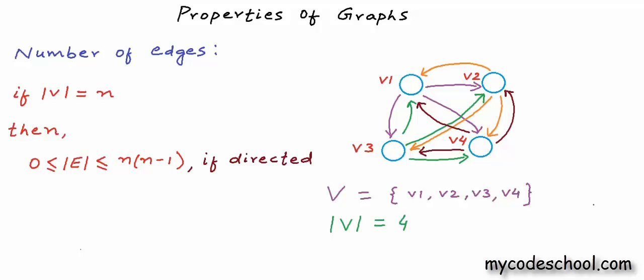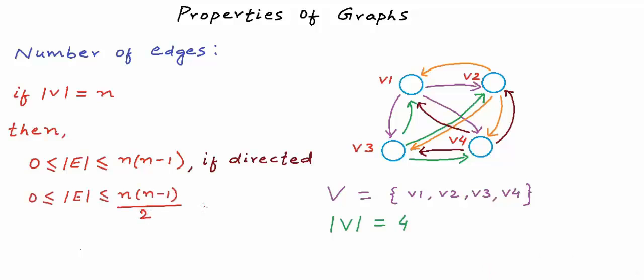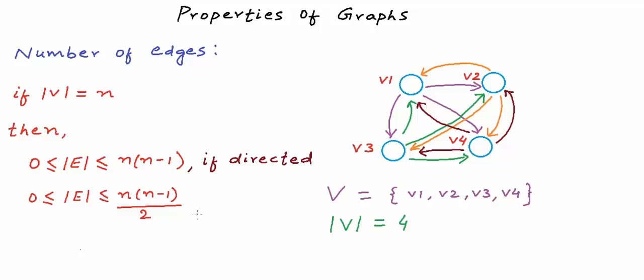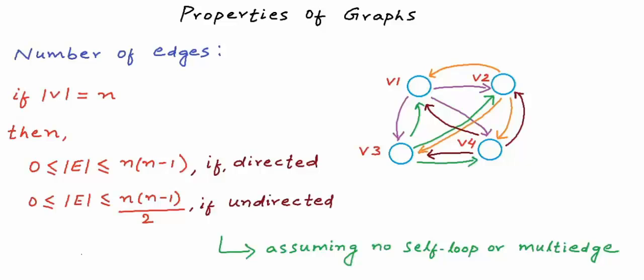What would be the maximum for an undirected graph? In an undirected graph, we can have only one bidirectional edge between a pair of nodes — we can't have two edges in different directions. So the maximum would be half of the maximum for directed. If the graph is simple and undirected, the number of edges is in the range 0 to n(n−1)/2. Remember, this is true only if there is no self-loop or multi-edge.